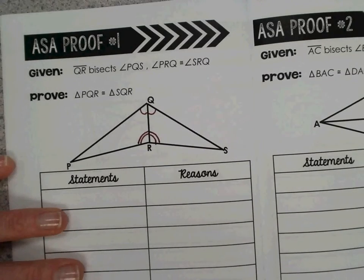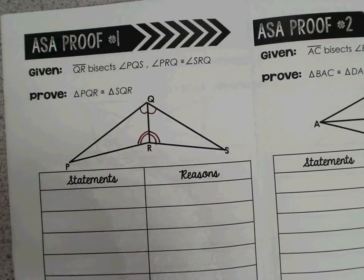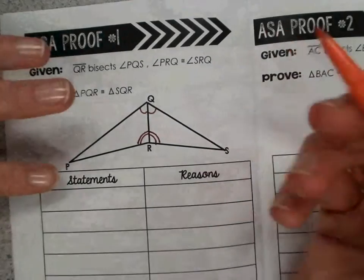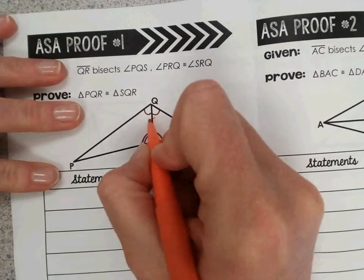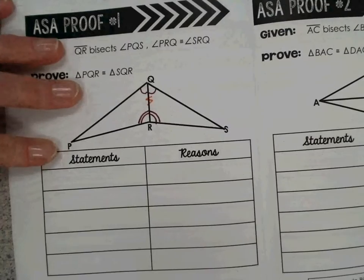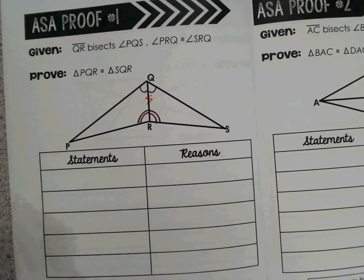And now, like our previous example, we have a shared side. Whenever we have a shared side, it's good to mark that. I mark it with a zigzag. We have a side that is shared, so it's congruent to itself.